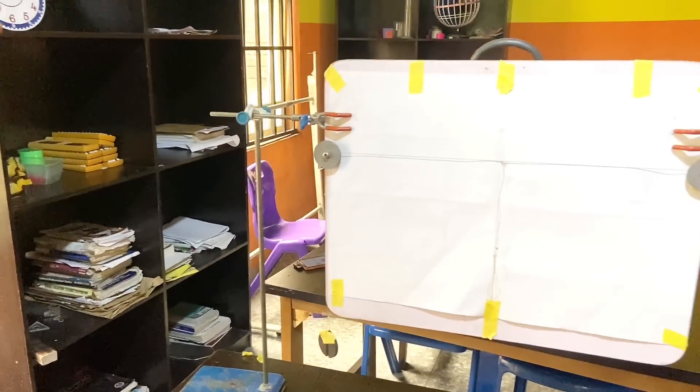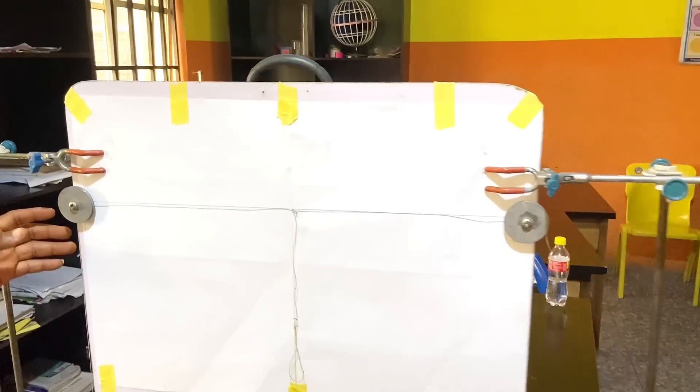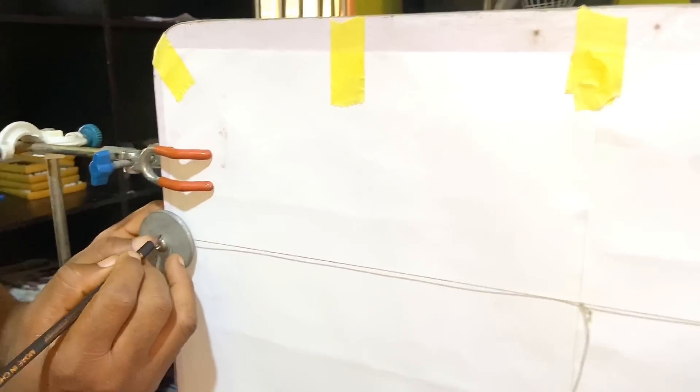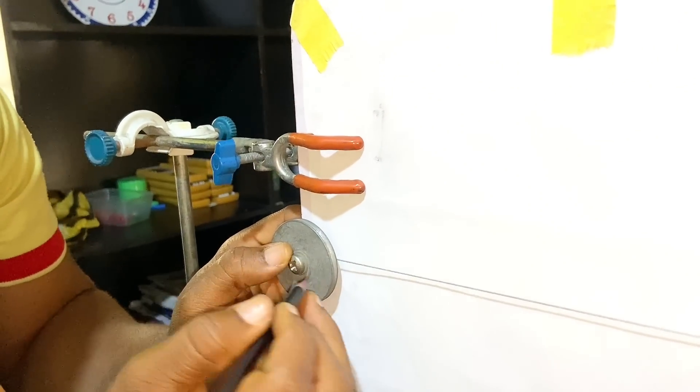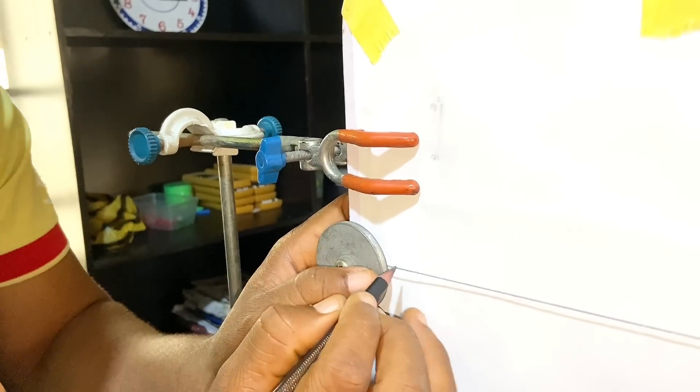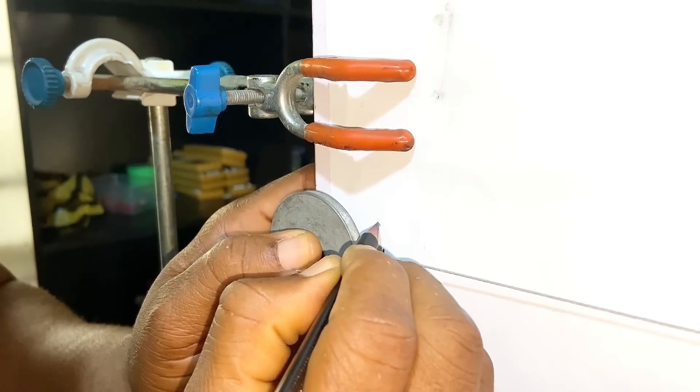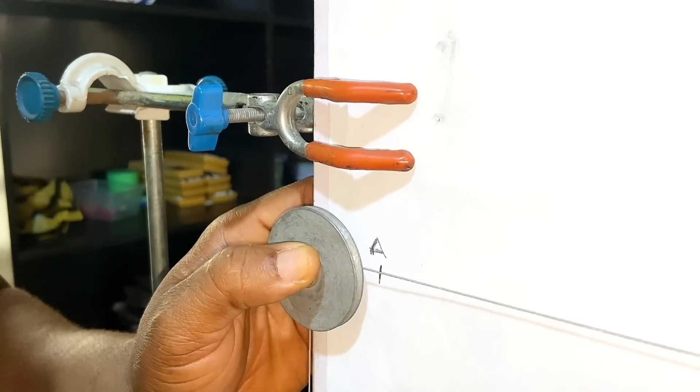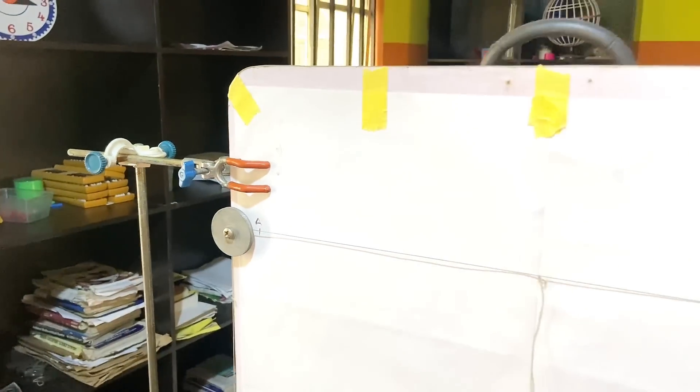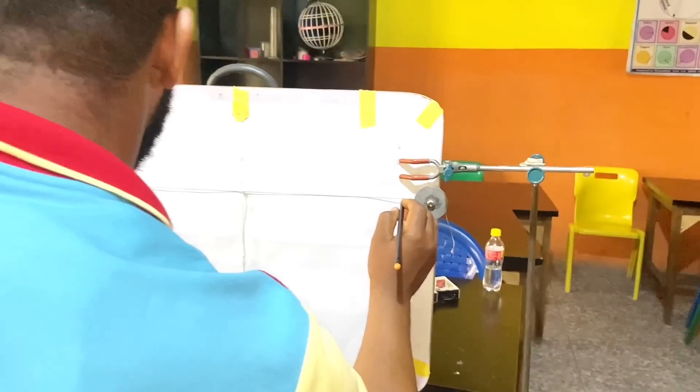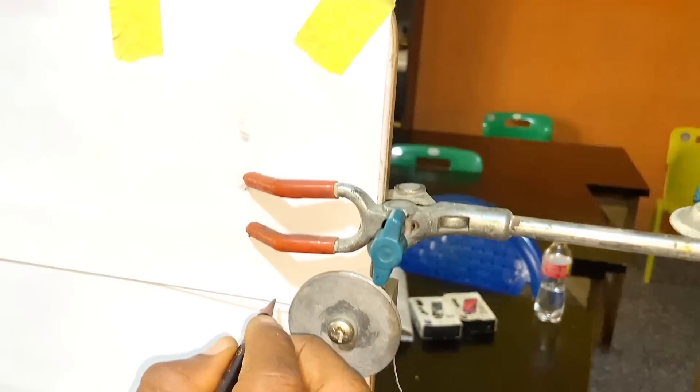So now guys, after the setup, I'm going to make a point. Because see, this is supposed to be my point A, but I cannot write point A inside there, so I'm going to make any point here. Call it my point A. Then go to the other thing, make a point at this point as well. Call it my point C, because my point C cannot enter here.